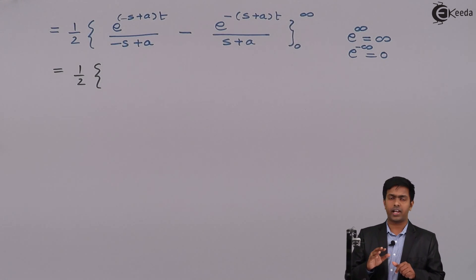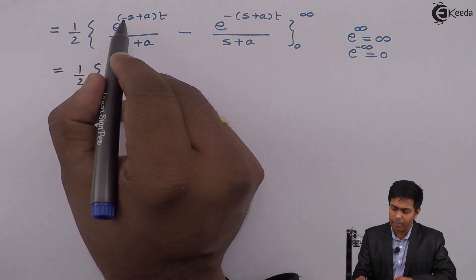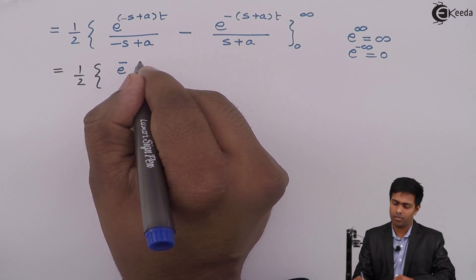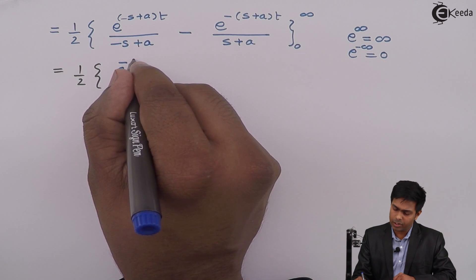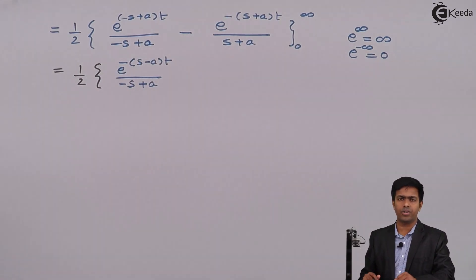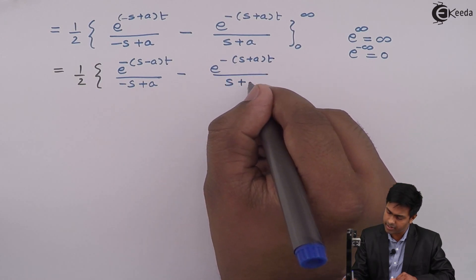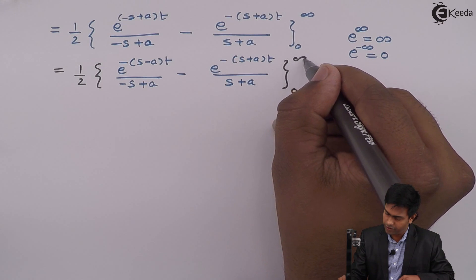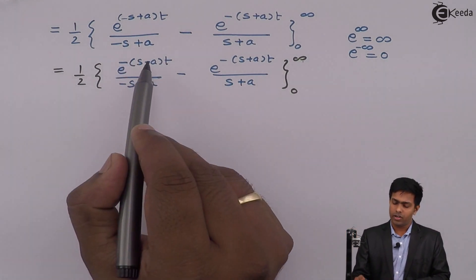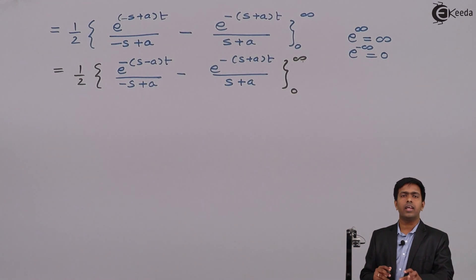To achieve this, I take a minus sign common from the exponent. In the second term, taking the minus sign common from minus s minus a, we get a positive s minus a, and the denominator becomes minus s plus a, which we rewrite as a negative times s plus a. Now if we substitute infinity for t, we get e raised to minus infinity, which equals 0. We are successful in bringing the term to the form e raised to minus infinity.